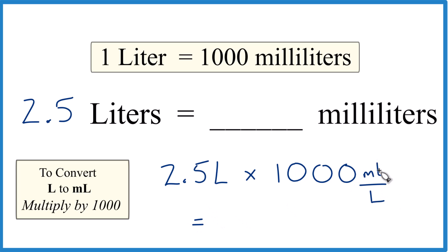Now, when we multiply, liters are on top and on the bottom. They cancel out, and we're left with milliliters. So we know we did it right.